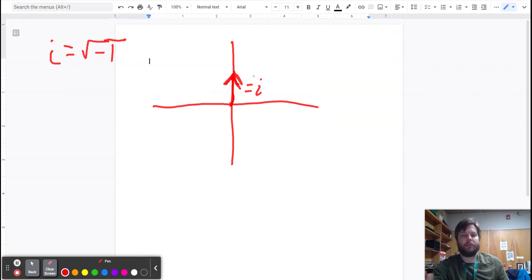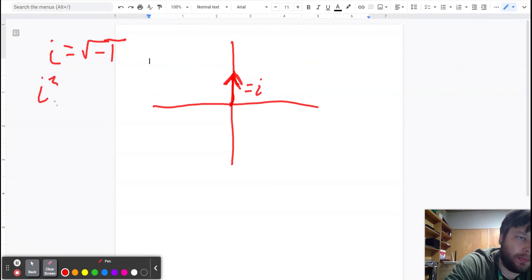What you can start thinking about is multiplying. So what happens if we do i times itself? Well, if you square a square root, they cancel out and you just get negative one.